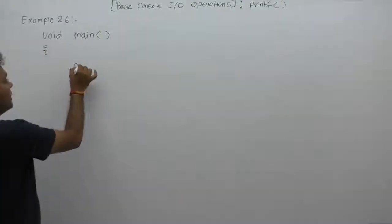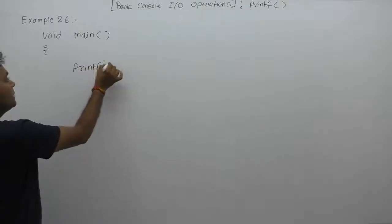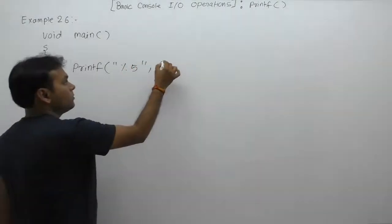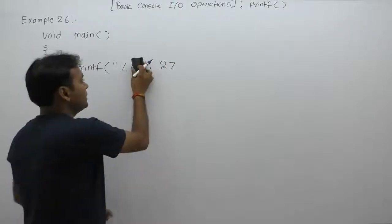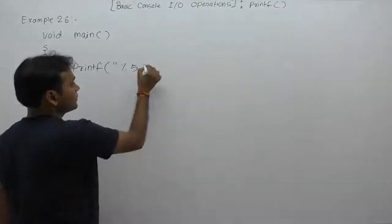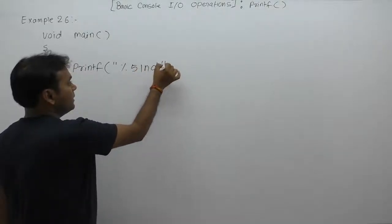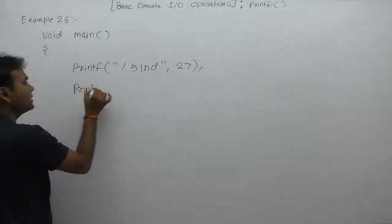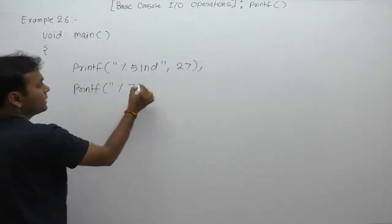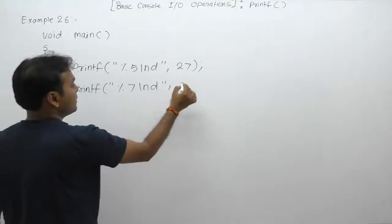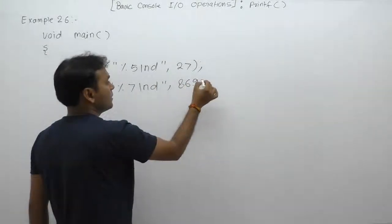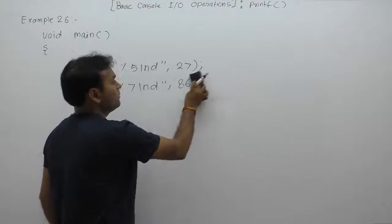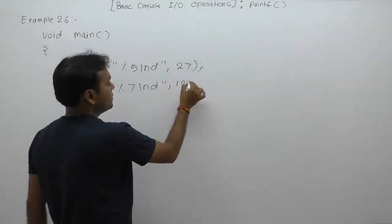Now displaying in required formats: first printf uses percent 5d with value 27 along with slash n. Second printf uses percent 7d with value 12345 (since a large number like 8694 may exceed integer range, we use 12345). These are two different printf statements using different width values — percent 5d and percent 7d — which we are about to analyze for their output.